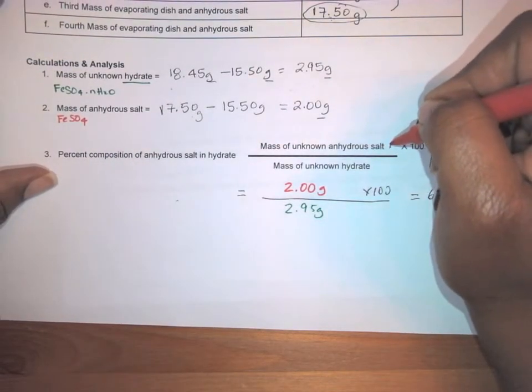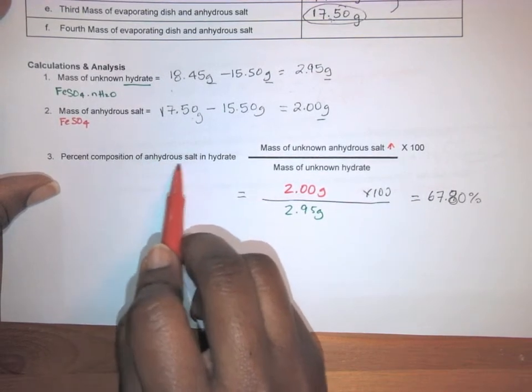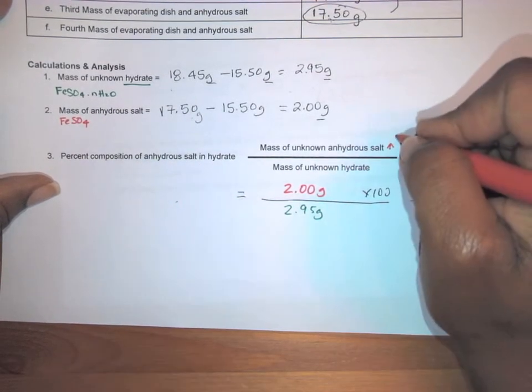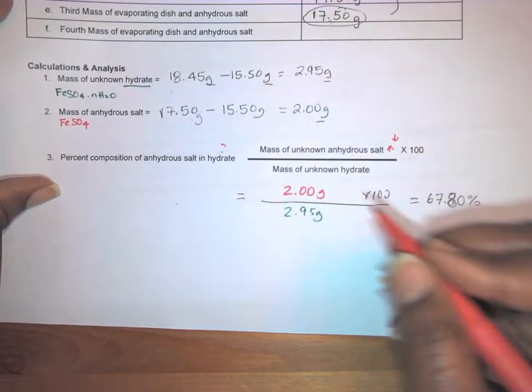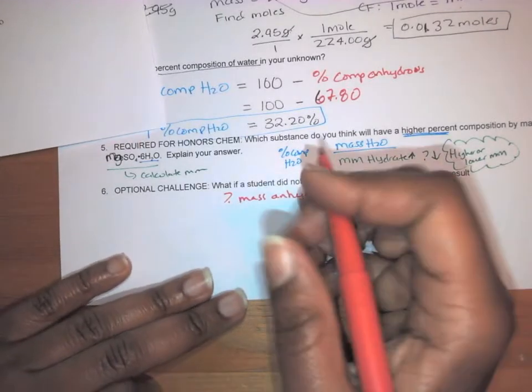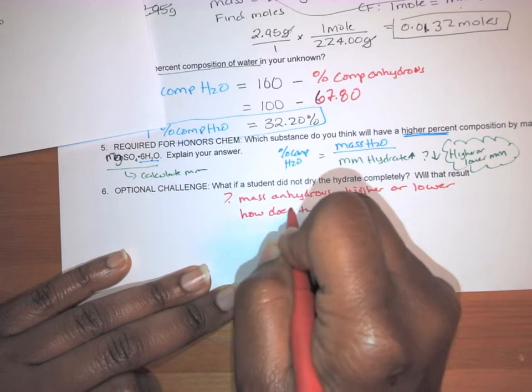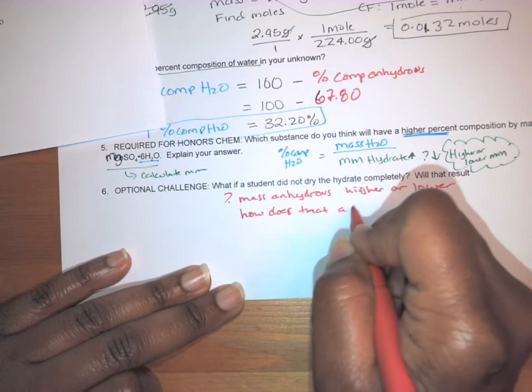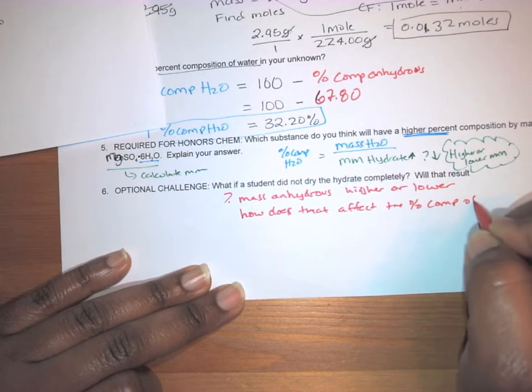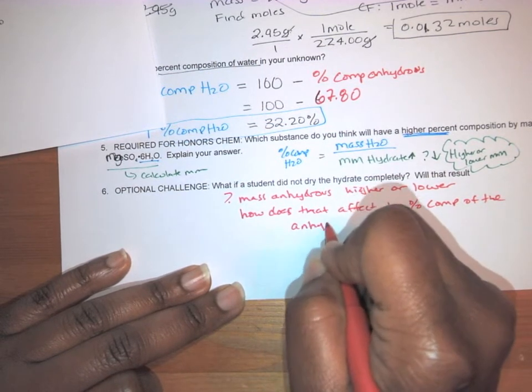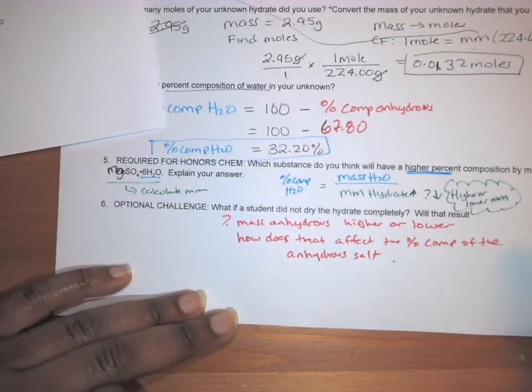And so based on that, if it's not dry, if this number goes up, what's going to happen to the percent anhydrous salt and hydrate? Or if not being dried lowers this number, if that number goes down, what happens to this? So that's what you're basically answering here. And then, so the next question is how does that affect the percent comp of the anhydrous salt? That's what you're doing there. That's it for the post lab question video.